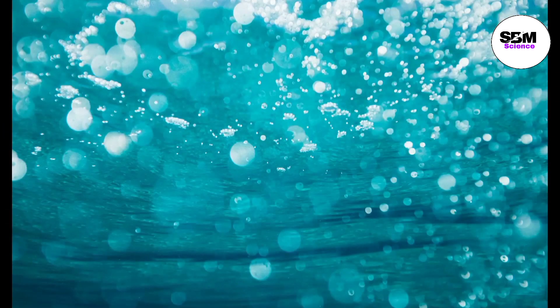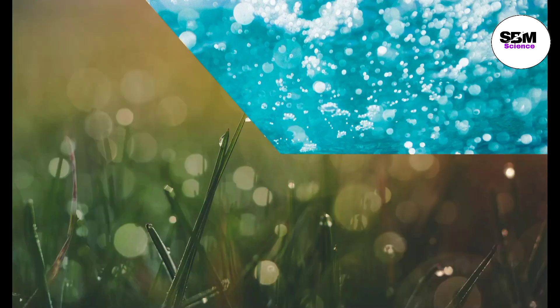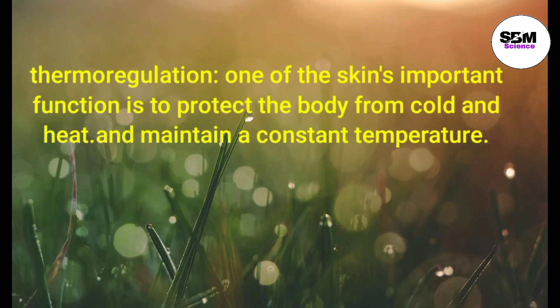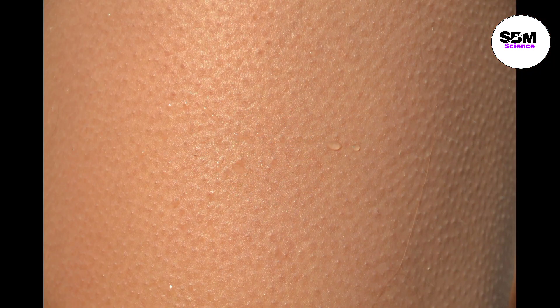The skin of the human body has various functions. Protection is the primary function of skin — it acts as a barrier providing protection from mechanical impacts, variations in temperature, microorganisms, radiation, and chemicals. Thermoregulation is another important function: the skin protects the body from cold and heat and maintains a constant temperature. During warm periods, blood vessels dilate and the skin radiates heat, and beds of sweat form on the surface. In cold periods, blood vessels constrict, preventing heat from escaping.